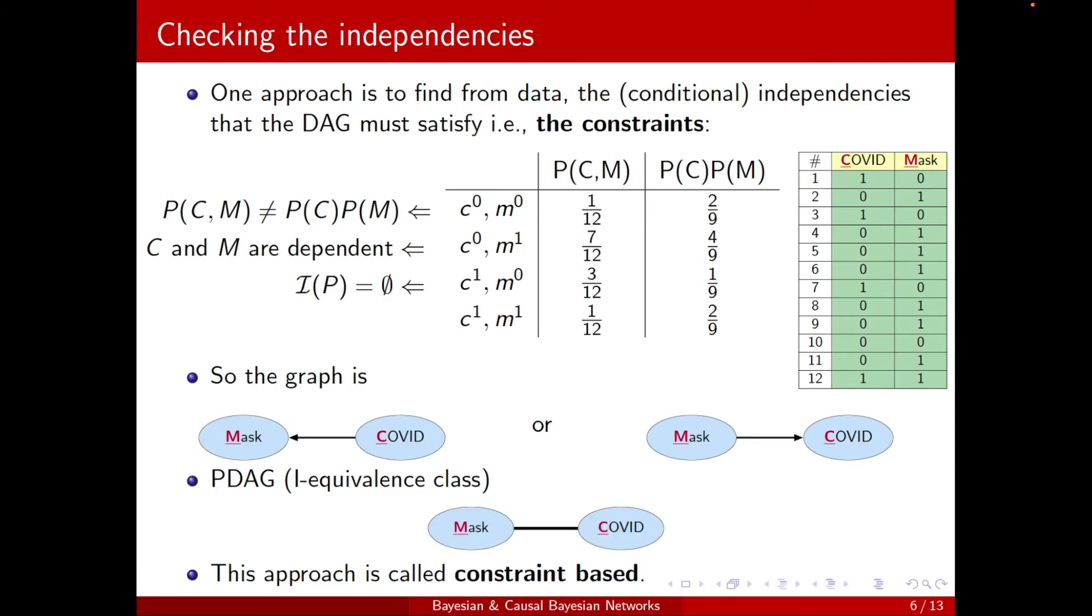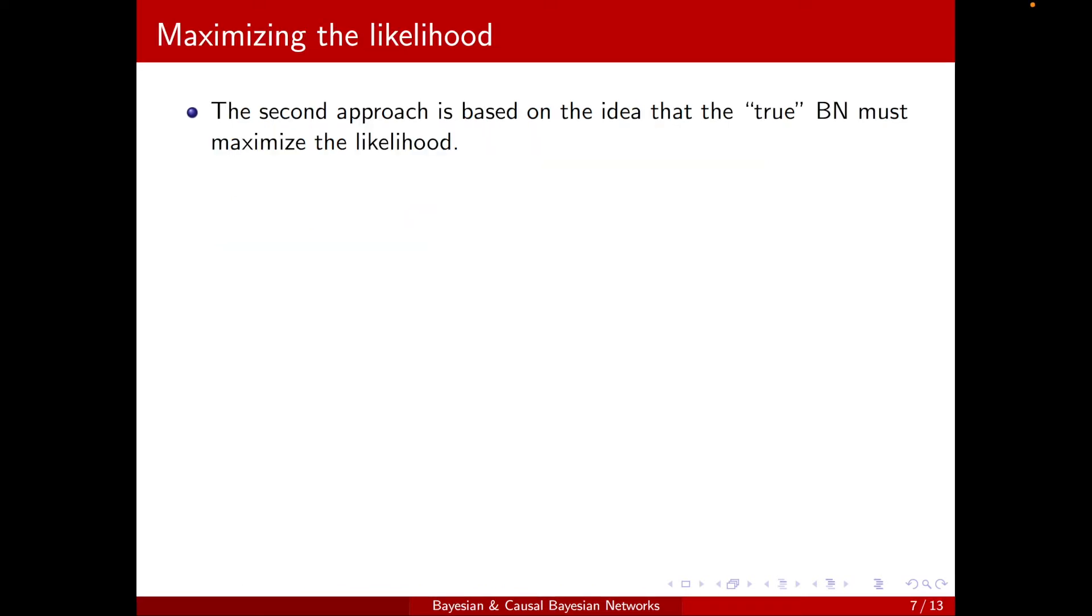So those are the challenges with this approach. Another approach is based on the idea that the true Bayesian network must maximize the likelihood. If the data was generated based on some Bayesian network, meaning that the underlying joint probability distribution was factorized according to the structure of that Bayesian network,